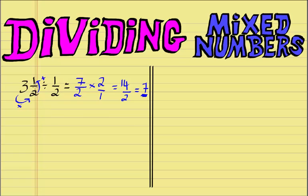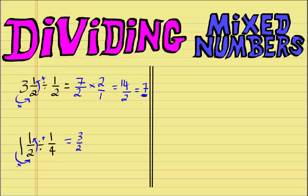One final example of dividing this sort of fraction. Say if we had 1 and a half divided by a quarter. We first convert the mixed number into an improper fraction — so 1 times 2 is 2 plus 1 is 3, giving us 3 on 2. We then change the division sign into a multiplication sign and flip the second fraction upside down, so 4 on 1. We multiply out: 3 times 4 is 12, and 2 times 1 is 2.